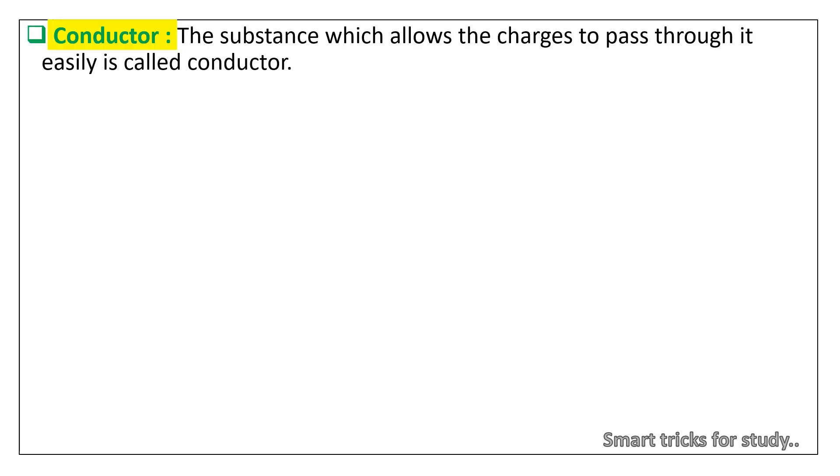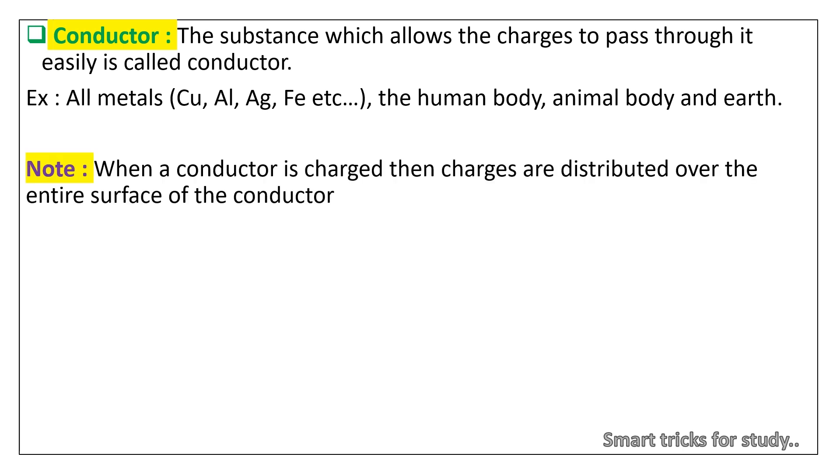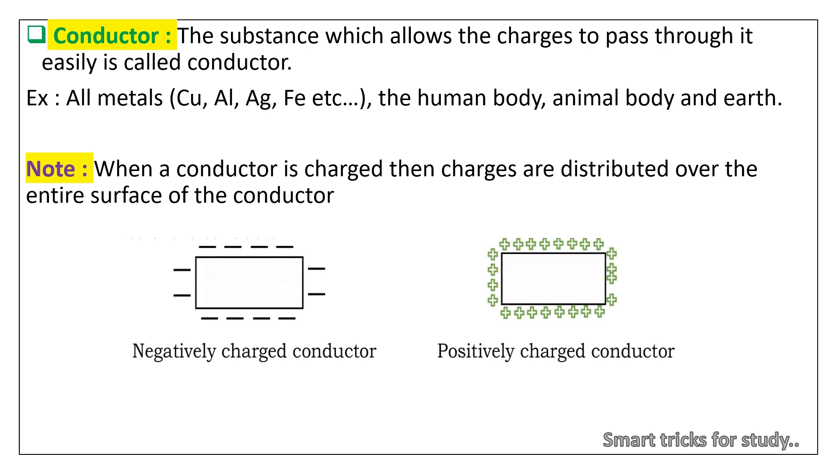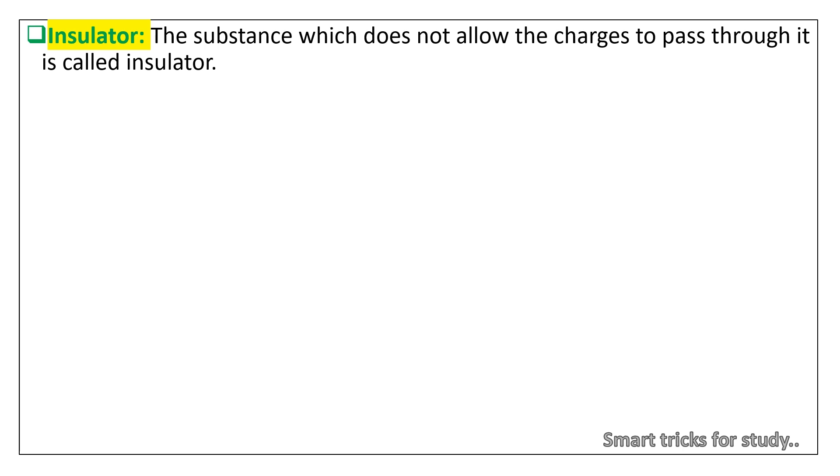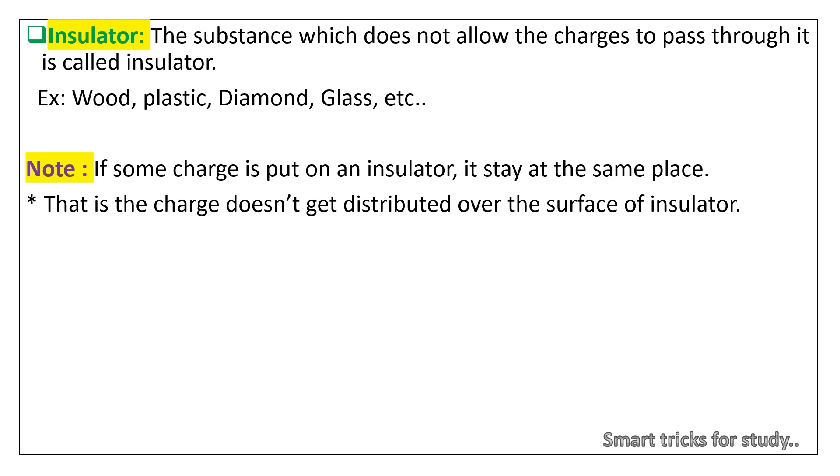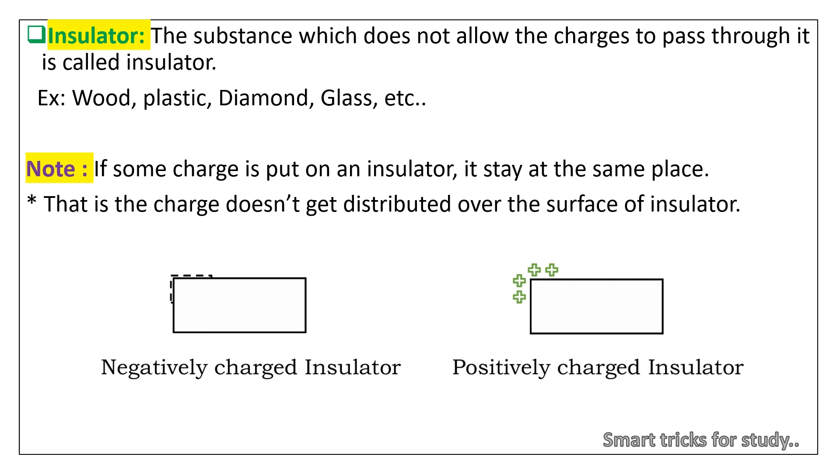Next look into conductor and insulators. Conductor: The substance which allows the charges to pass through it easily is called conductor. Examples: all metals, copper, aluminum, Ag (silver), Fe (iron), etc., the human body, animal body, and earth. Note: When a conductor is charged then charges are distributed over the entire surface of the conductor. Insulator: The substance which does not allow the charges to pass through it is called insulator. Example: wood, plastic, diamond, glass, etc. Note: If some charge is put on an insulator, it stays at the same place. That is, the charge doesn't get distributed over the surface of insulator.